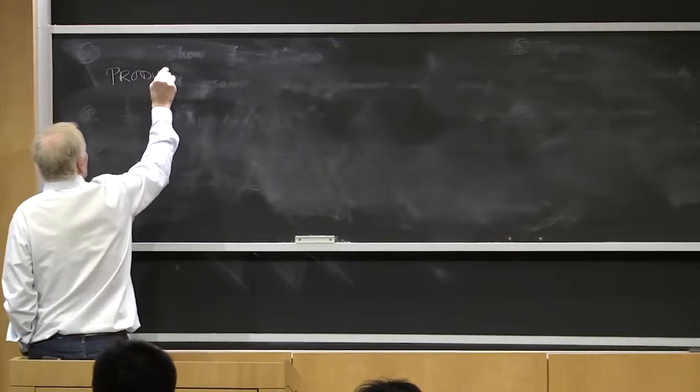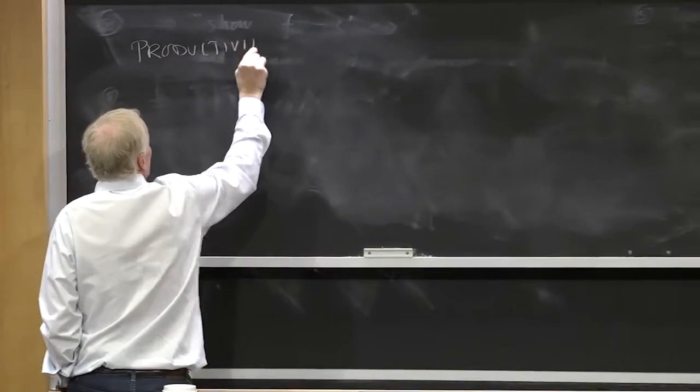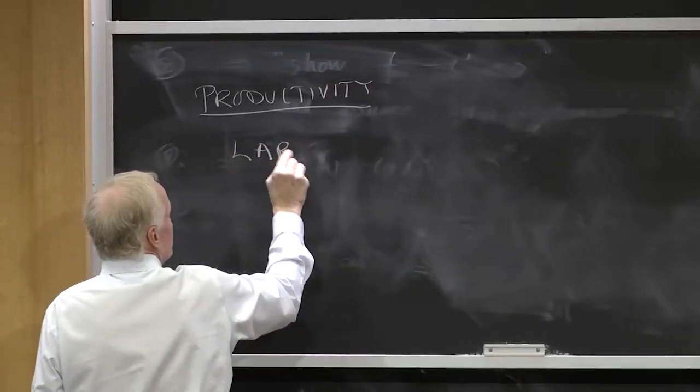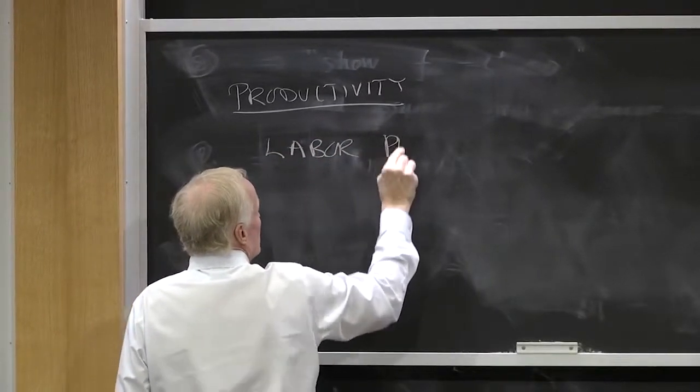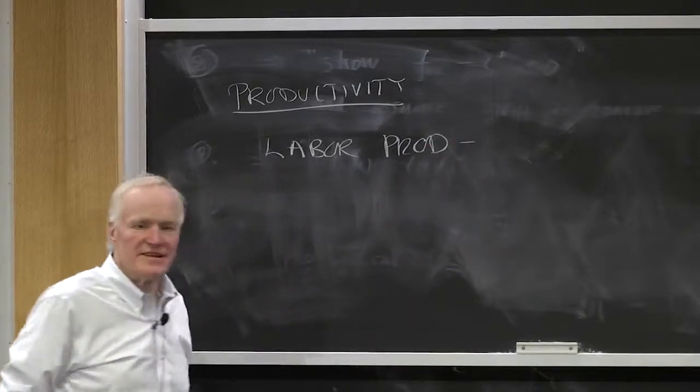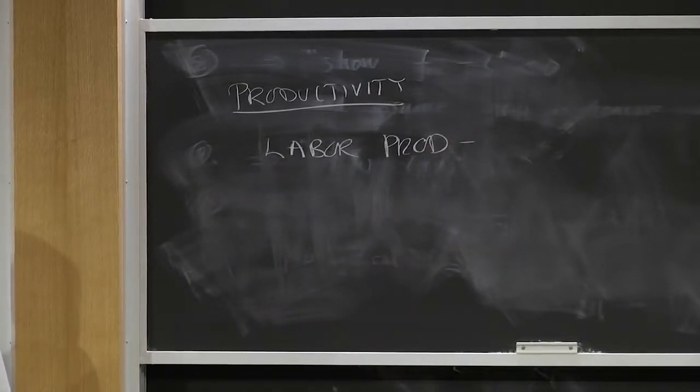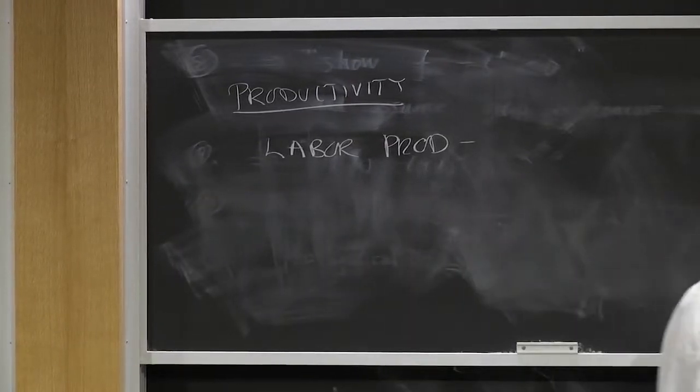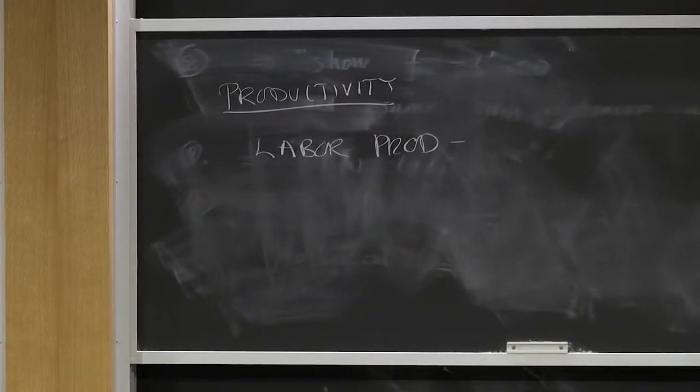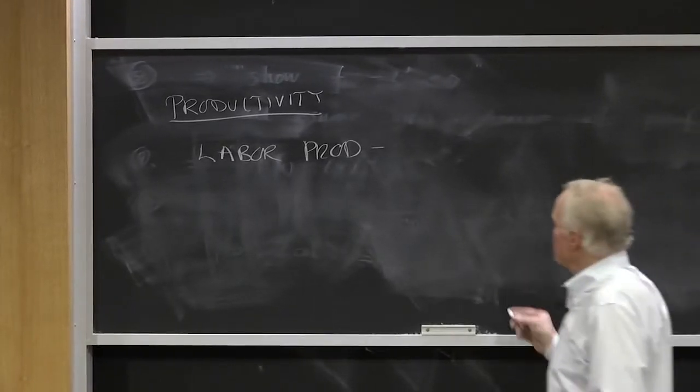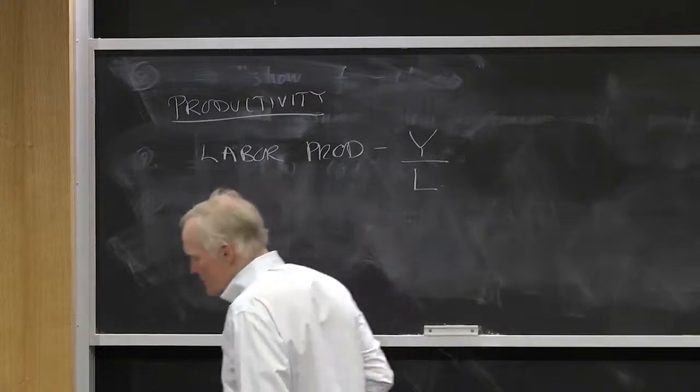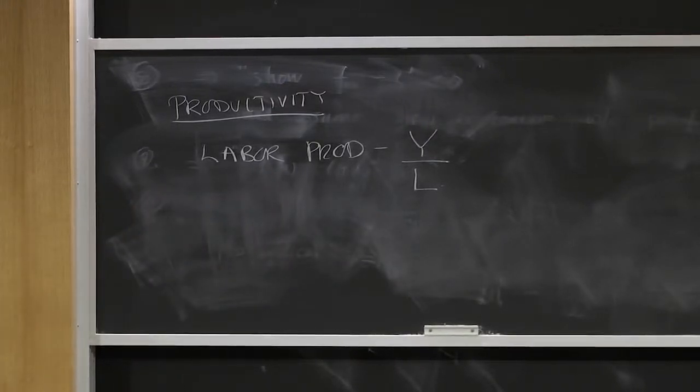And productivity, the most common measure of productivity is called labor productivity. So when you hear the productivity statistics that are typically cited, productivity grew at X percent, it's normally labor productivity they're talking about, which is just Y over L. That's just the ratio of output to labor, output per man-hour.